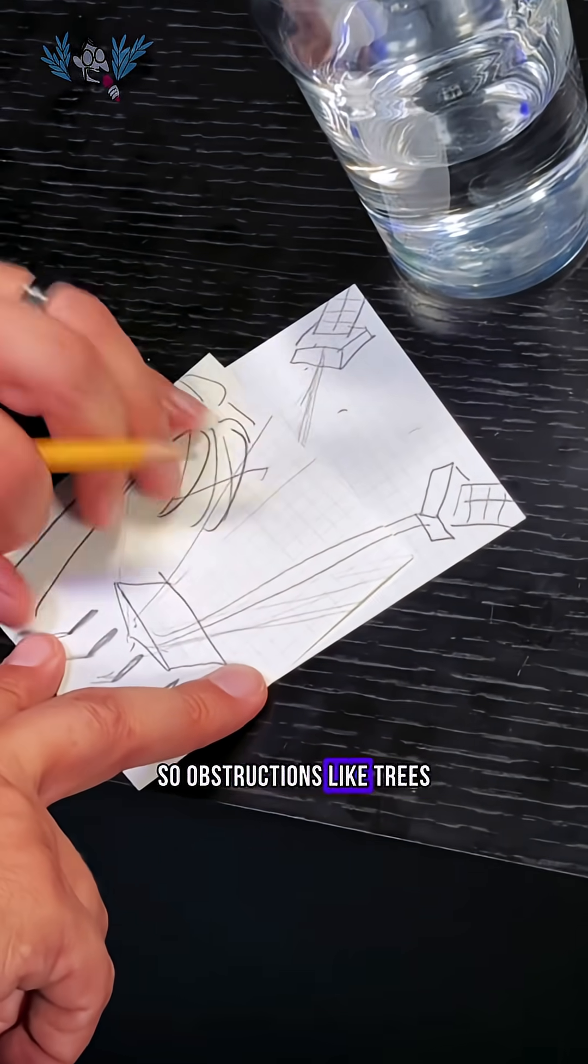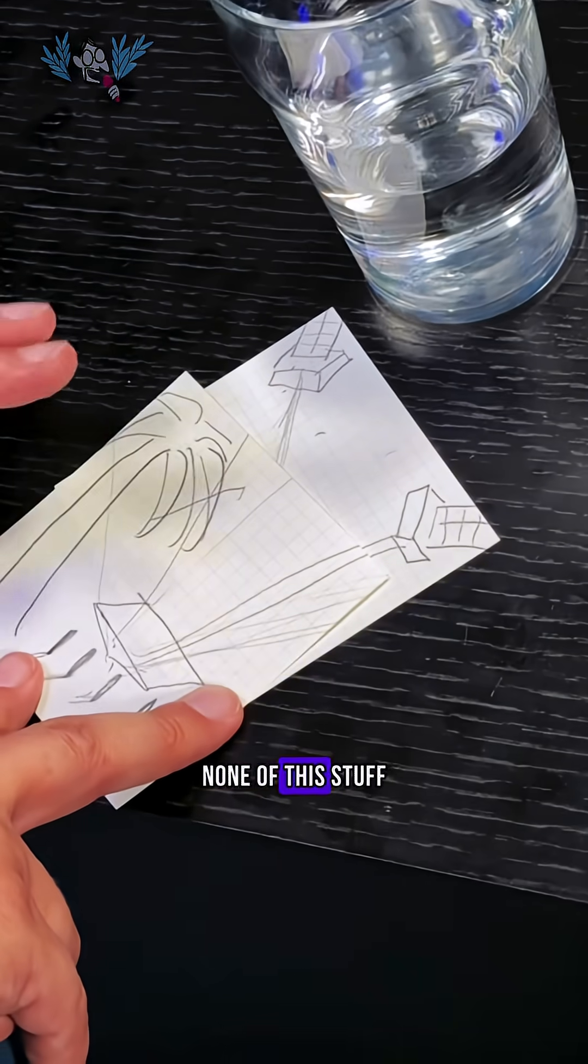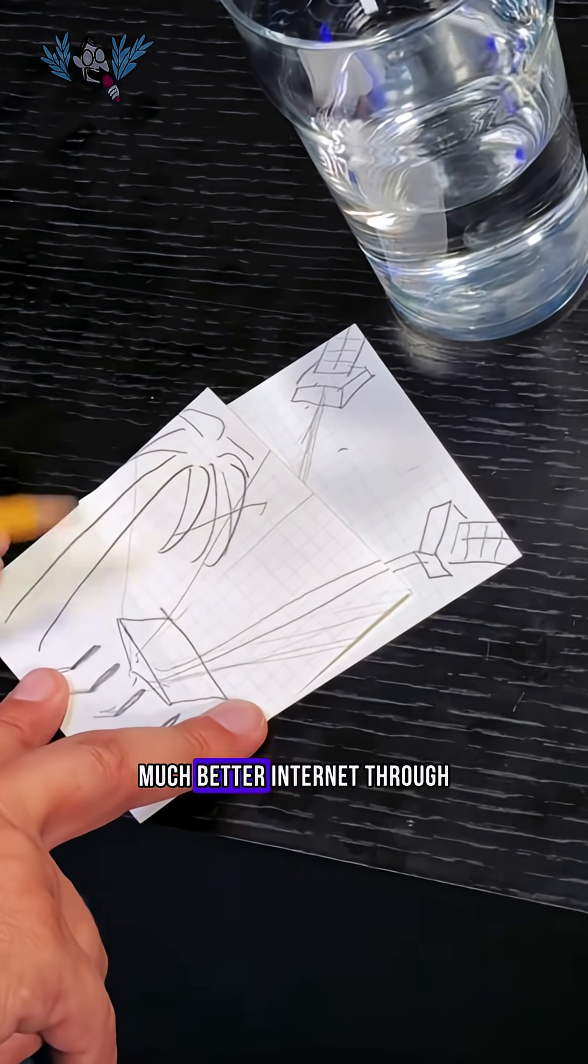So obstructions like trees, nearby buildings, none of this stuff affects you anymore. You just get much better internet through your Starlink.